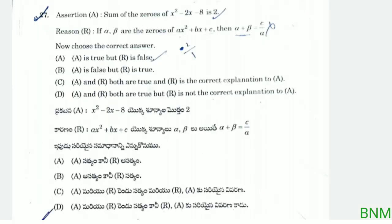Next question — assertion A: the sum of the zeros of x squared minus 2x minus 8 is 2. Reason: if alpha, beta are the zeros of ax squared plus bx plus c, then alpha plus beta equals c by a. That reason is wrong — the correct formula is minus b by a, not c by a. Using the correct formula: minus b by a, where b is minus 2 and a is 1, gives minus (minus 2) by 1, which equals 2. So assertion is correct but reason is wrong.